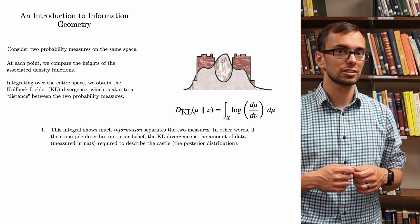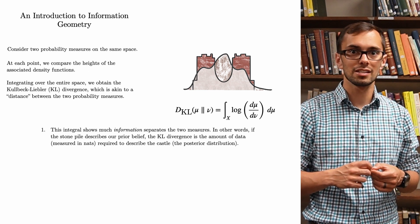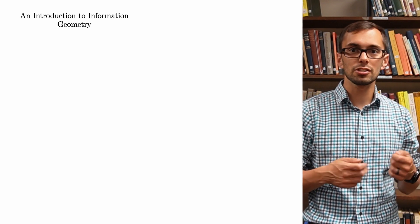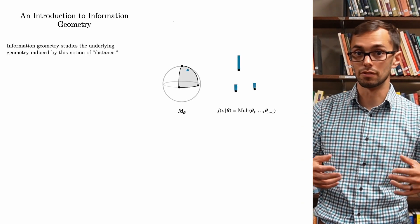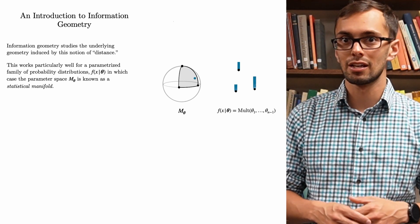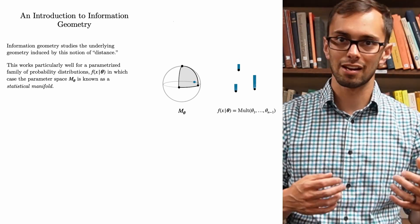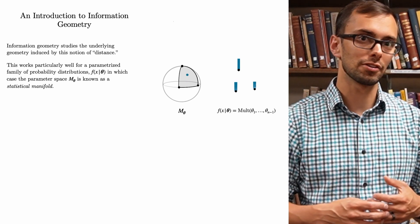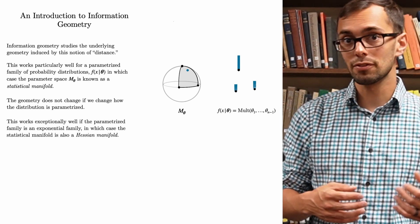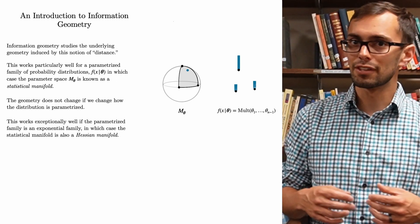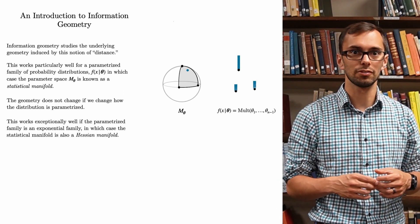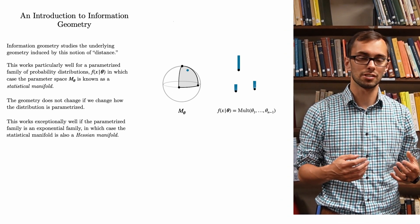Second, this is not a distance function in the usual sense. The KL divergence is not symmetric, so if we switch the roles of the sand pile and the castle, we get a different answer. Information geometry studies the underlying geometry induced by this notion of distance. This idea works particularly well for parameterized families of probability distributions. In this case, the parameter space is known as a statistical manifold. One of the key facts about this framework is that the geometry does not change if we change how the distribution is parameterized. As a brief aside, information geometry works exceptionally well if the parameterized family is an exponential family, in which case the statistical manifold has the structure of a Hessian manifold, which allows for much simpler computations of the geometric quantities.